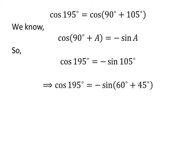105 degrees is equal to 60 degrees plus 45 degrees. So, cosine of 195 degrees is equal to minus sine of 60 degrees plus 45 degrees.